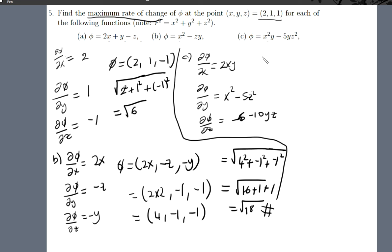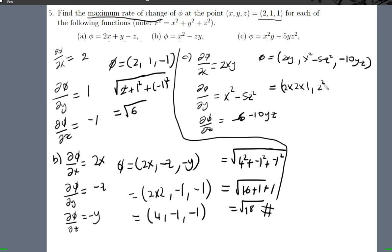Let's put them as coordinates: (2xy, x squared minus 5z squared, minus 10yz). Now let's substitute the values in. We get 2xy, then minus five times one squared, and minus 10 times one times one is minus 10. Therefore we'll get 4, then four minus five is minus one, and minus 10.